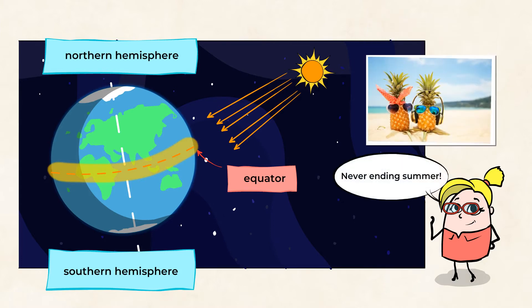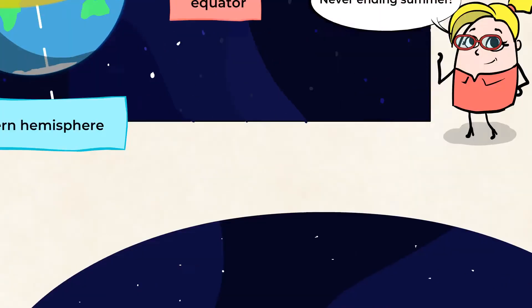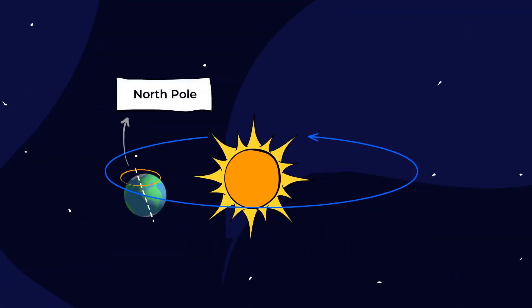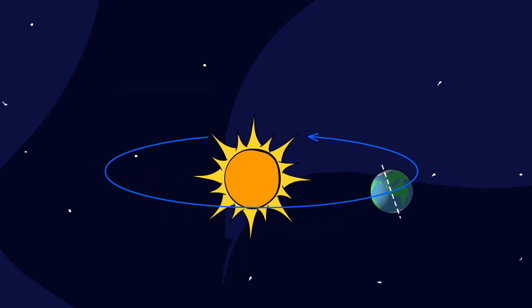It's like a never-ending summer. How lucky! The North Pole is the point that is farthest north on our planet. When the North Pole is tilted toward the sun, something pretty amazing happens.